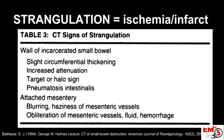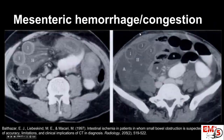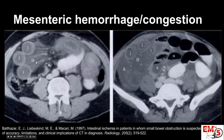The bowel wall itself can show signs of ischemia or infarct. Beyond thickening, it can also have increased attenuation if it starts getting edematous. Another finding is the target sign, which indicates edema or hemorrhage of the wall — a very concerning sign. You can also see the mesentery where it's being strangulated get very congested and even show hemorrhage. Here you see the radial array sign with bowel wall enhancement, and hemorrhage, edema, and congestion in the mesentery — where normally you'd see the dark black fat of the mesentery — instead it's very enhanced.